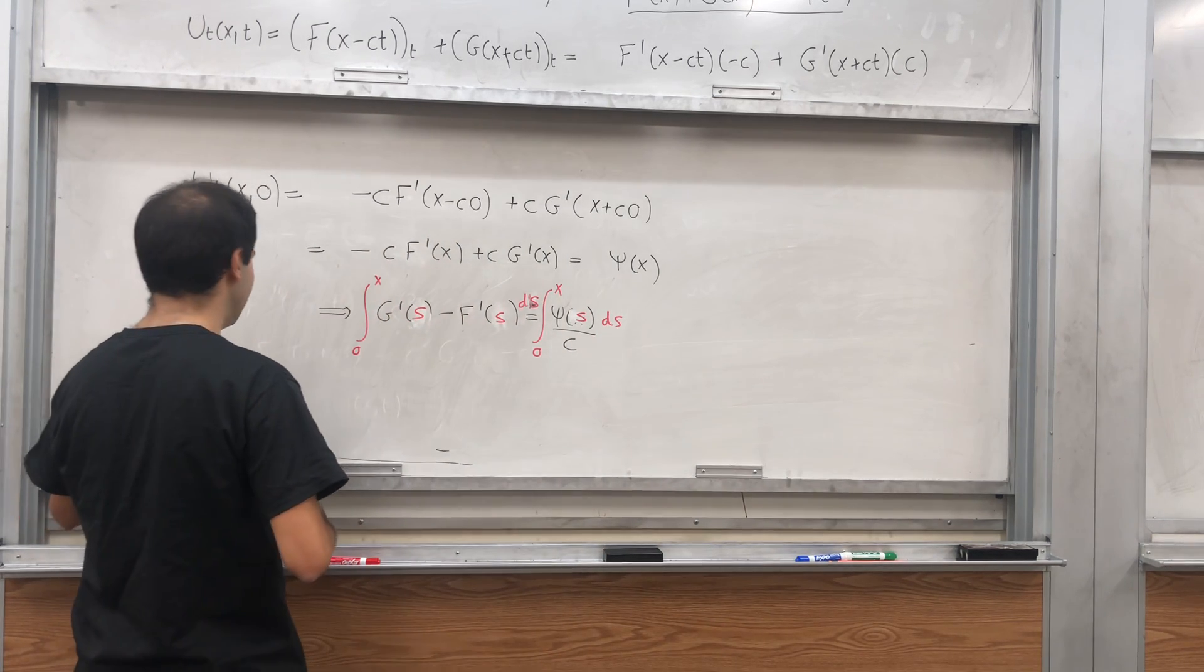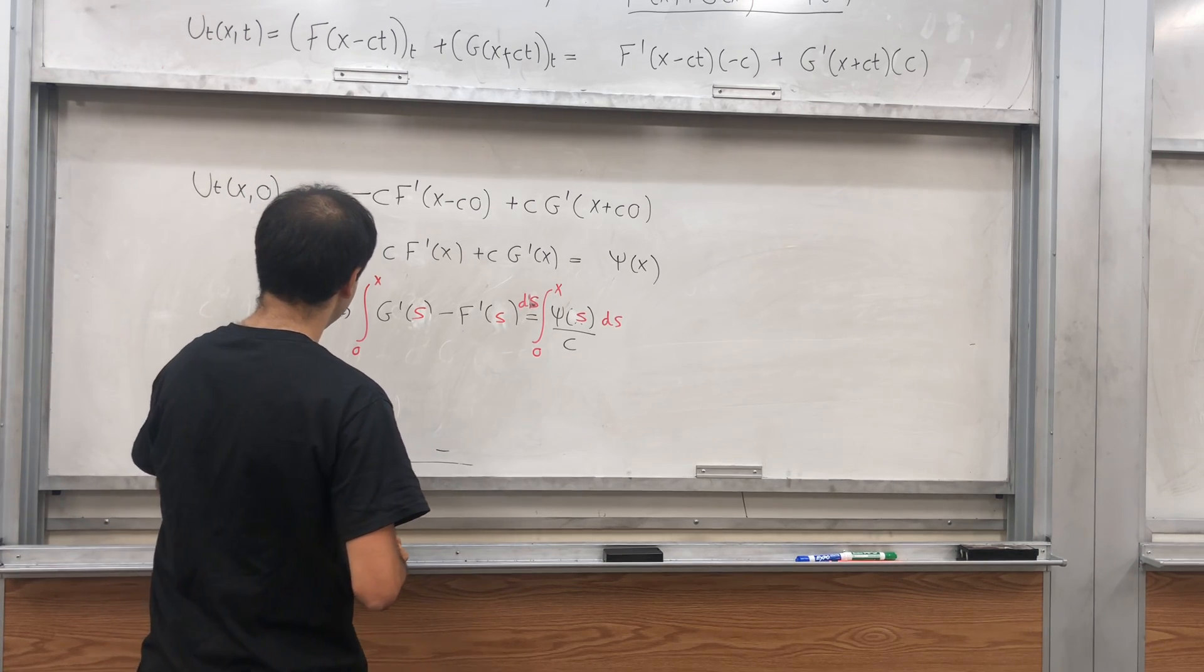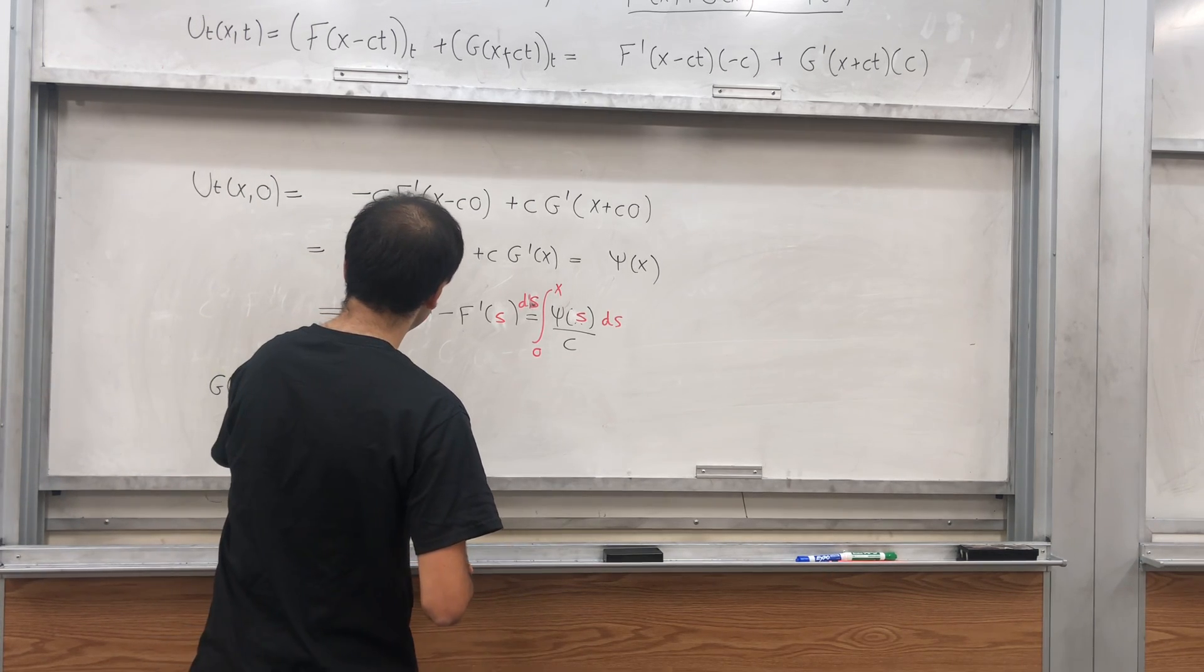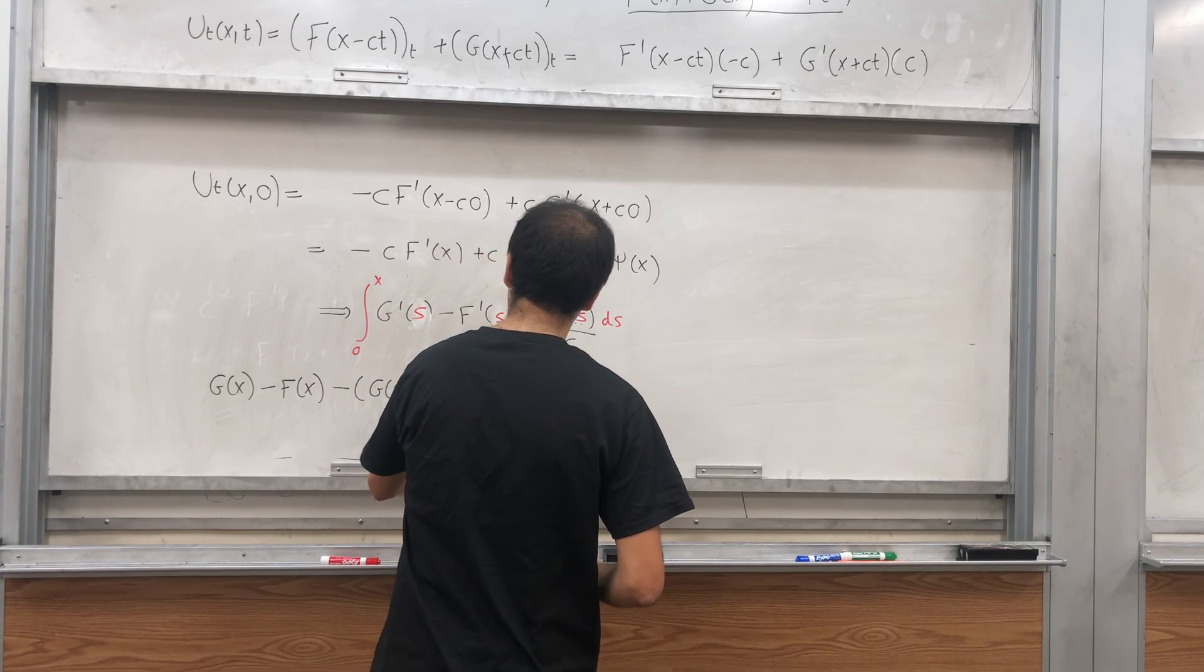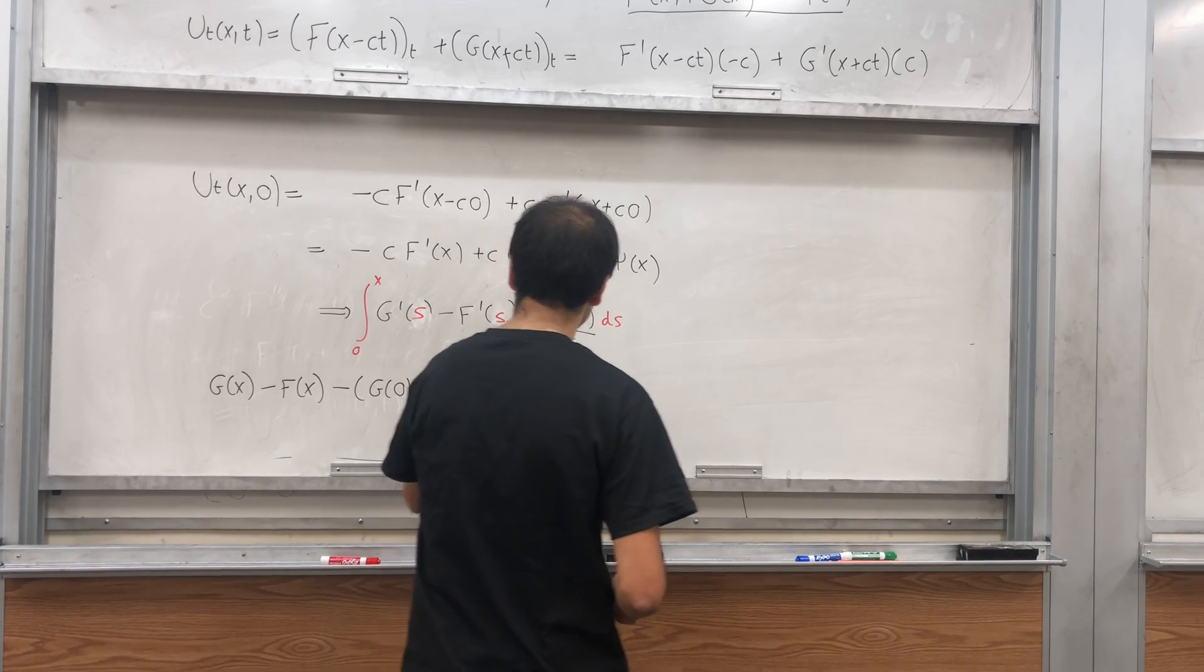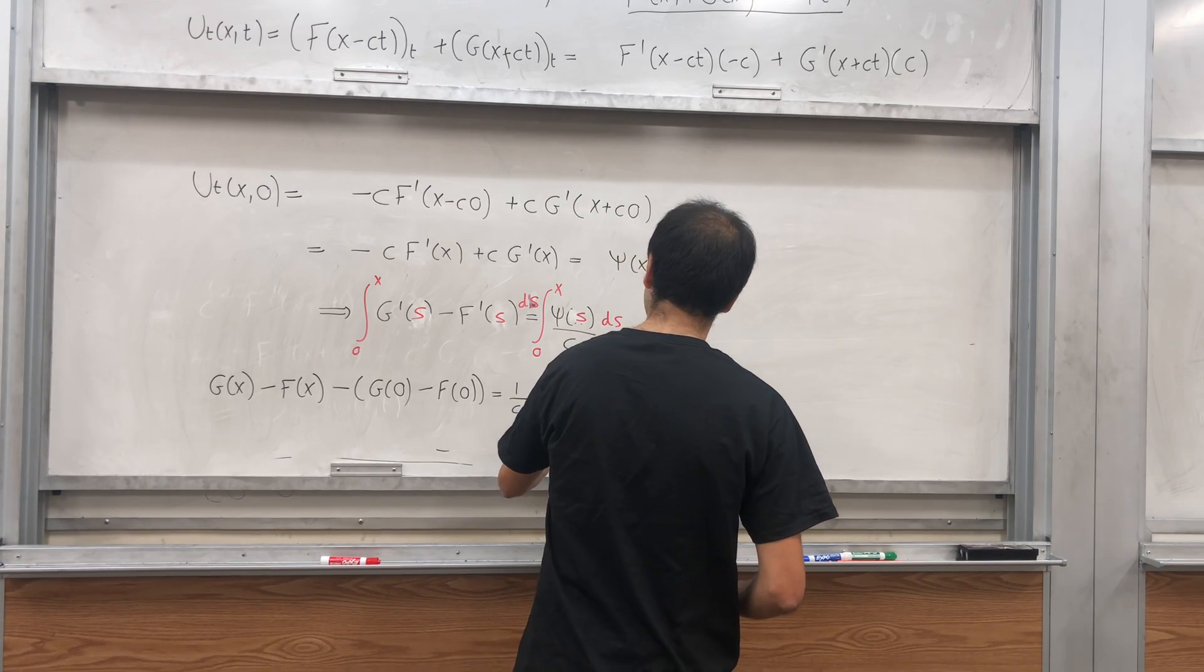Is psi of s ds of this. And then using the FTC, we get G of x minus F of x minus G of zero minus F of zero.